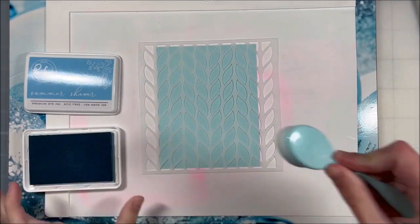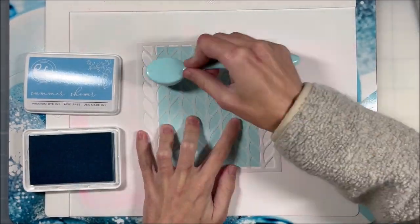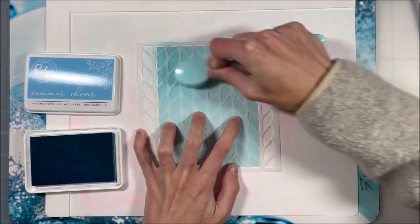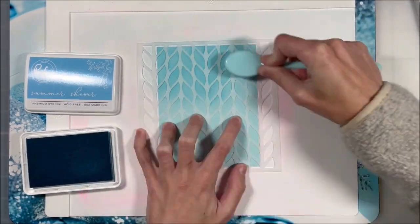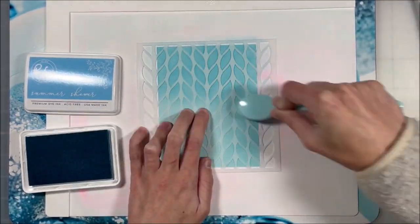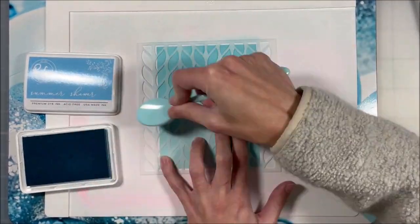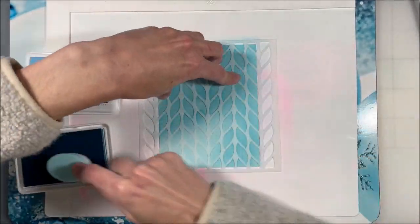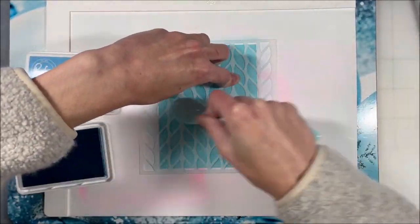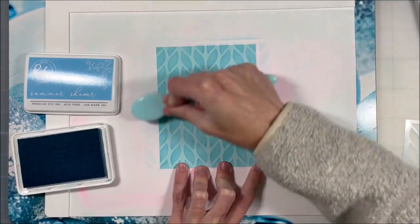So I'm gonna line that up on my cardstock, and this is just a simple blue cardstock. Then I'm going to blend on a little bit of a darker blue ink. This one happens to be Summer Shower from Pinkfresh Studio, but you could use any sort of dye ink or even oxide inks for this.